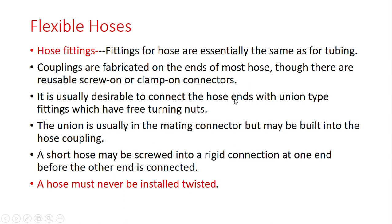It is usually desirable to connect the hose end with union-type fittings, which have a free-turning nut. The union is usually in the mating connector, but may be built into the hose coupling. A short hose may be screwed into a rigid connection at one end before the other end is connected. Generally, both sides are not swivel. The hose must never be installed twisted, as twisting reduces its life.